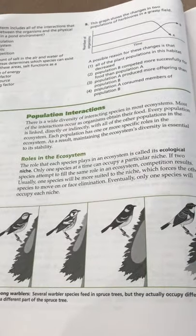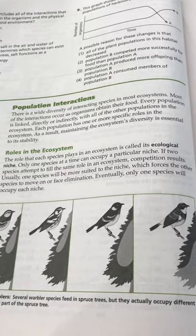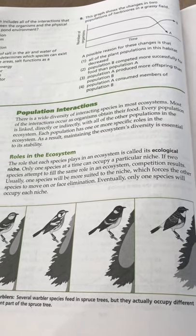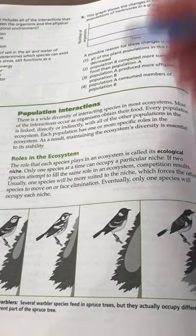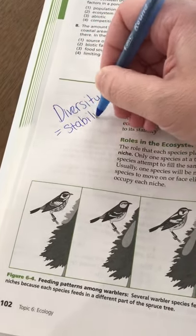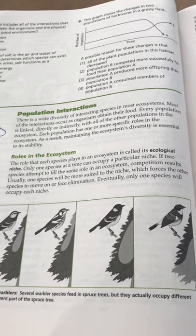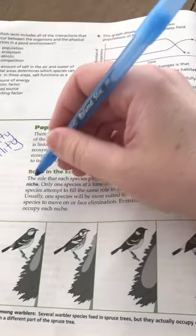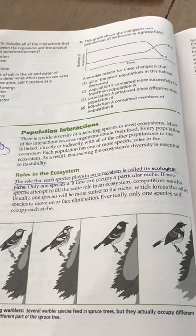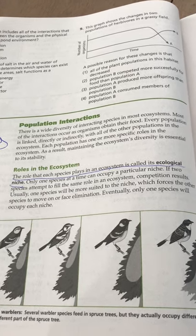Population interactions. There is a wide diversity of interacting species in most ecosystems. Most of the interactions occur as organisms obtain their food. Every population is linked directly or indirectly with all of the other populations in the ecosystem. Each population has one or more specific roles in the ecosystem. Maintaining the ecosystem's diversity is essential to its stability. The role that each species plays in the ecosystem is called its ecological niche. Only one species at a time can occupy a particular niche. If two species attempt to fill the same role in an ecosystem, competition results. Usually one species will be more suited to the niche, which forces the other species to move on or face elimination. Eventually only one species will occupy each niche.